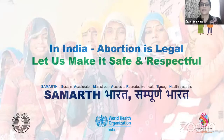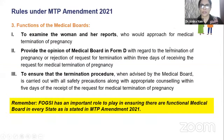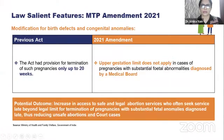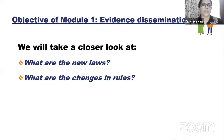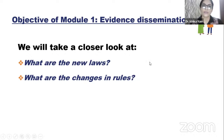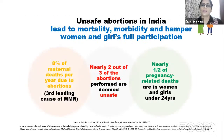In India, abortion is legal. Let us make it safe and respectful. Medical Termination of Pregnancy Amendment Act 2021 — we will take a closer look at what are the new laws and the changes in the rules. Abortion was legalized in India in 1971, around 50 years back. The first amendment came in 2003, where patient confidentiality became an important thing. Now we are talking about the amendment of 2021.